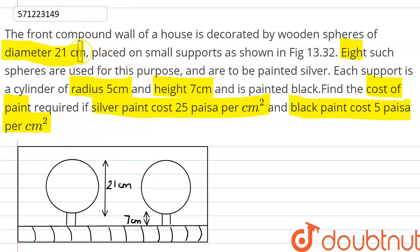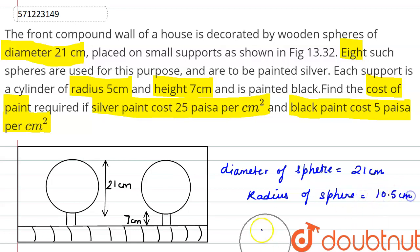So here we have to find the total cost. So this is the diagram for the question. We are given that the diameter of sphere is 21 cm. That means the radius of sphere will be 21 by 2, that is 10.5 cm.